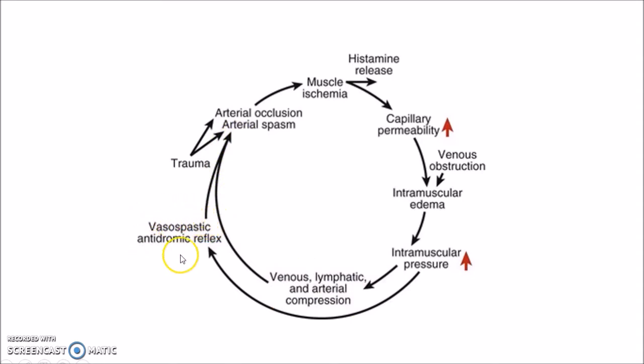This rise in intramuscular pressure causes venous, lymphatic and arterial compression, and the cycle continues. Vasospastic antidromic reflex also contributes to arterial occlusion and arterial spasm. Remember, this cycle is known as the Ayrton and Green cycle and it shows the pathogenesis of Compartment Syndrome.